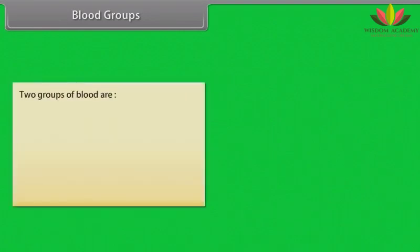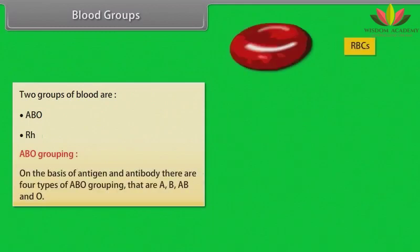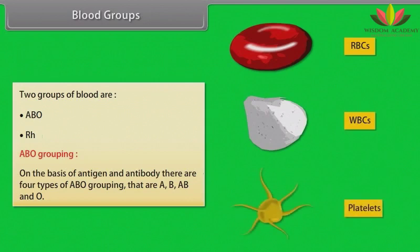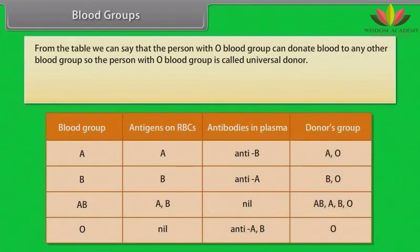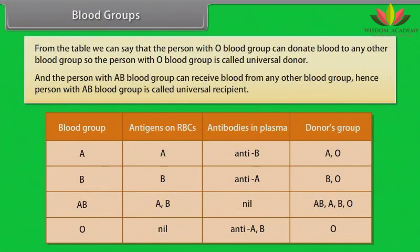Blood groups. There are two groups of blood: ABO and RH. ABO grouping is based on antigen and antibody, and there are four types — A, B, AB, and O. From the table, we can say that a person with O blood group can donate blood to any other blood group, so O is called the universal donor. A person with AB blood group can receive blood from any other blood group, hence AB is called the universal recipient.